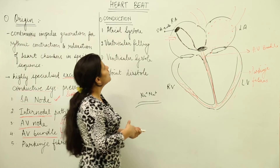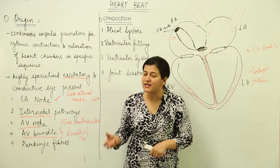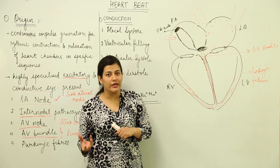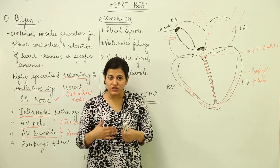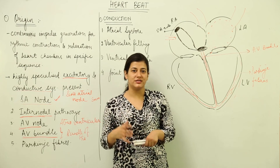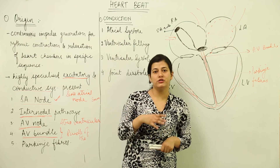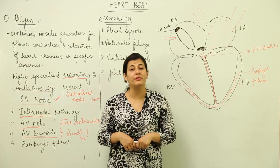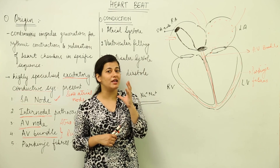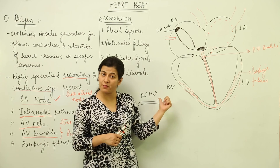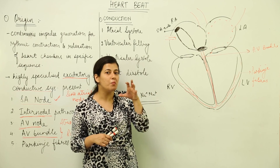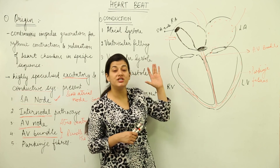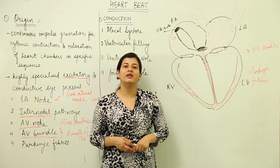This is the entire process of conduction — how it originates and how it is conducted throughout the heart. It is essentially an electrical potential generated and passed throughout the cardiac muscles. One key point: the SA node is self-excitatory. It is the concentration of sodium ions in the extracellular fluid that plays an important role in initiating contraction, and it does not depend on the neural system.